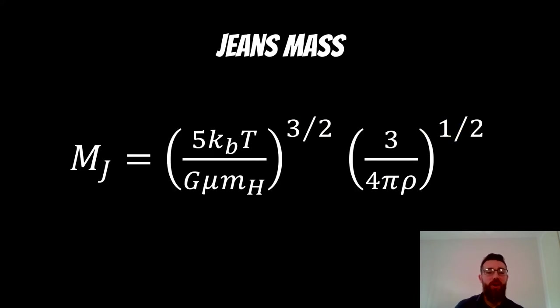So this is our expression then for the Jeans mass. And what we should see here is that the only variables in there is T, which is the temperature of the cloud, and your density ρ.